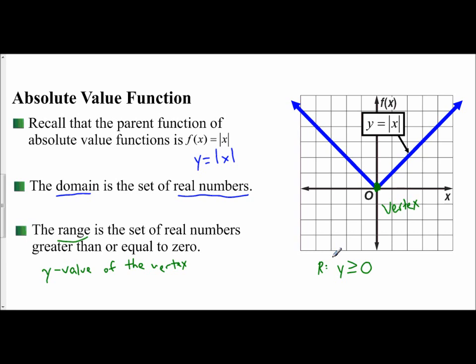So when we're dealing with translations, reflections, and dilations of absolute value functions, we're going to use y equals absolute value of x as our parent function. It helps to understand that the domain will always be all real numbers, and for the range, we have to identify our vertex and determine its location on the y-axis and which direction our arrows go to determine the symbol.